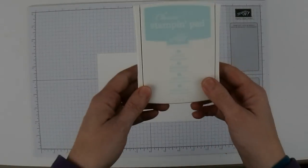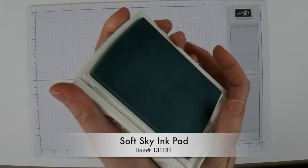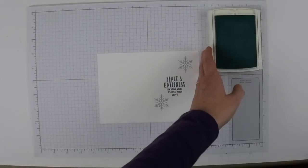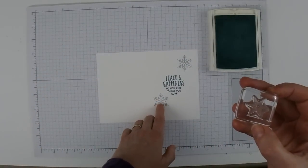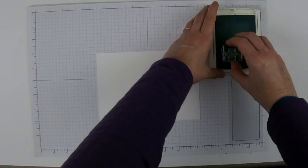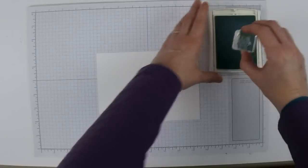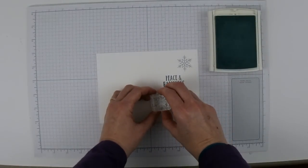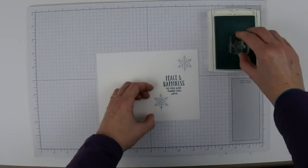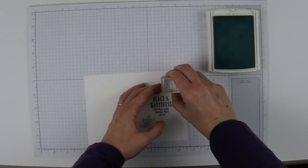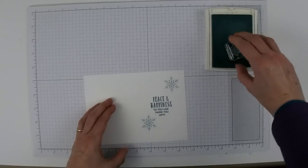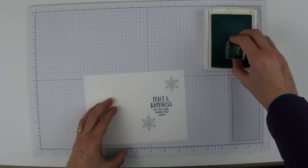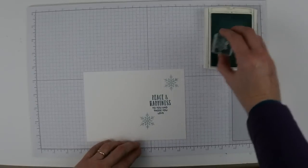Then I'm going to take my Soft Sky ink pad. There's this filler piece that fills in the middle part of the snowflake. I'm going to ink that up and I'm just going to hover it over the center until it looks lined up and stamp. I'm going to do the same for the top snowflake.